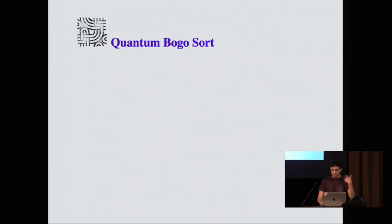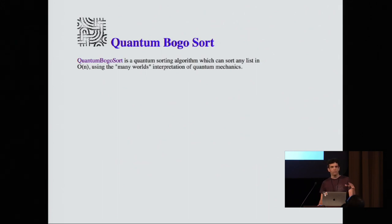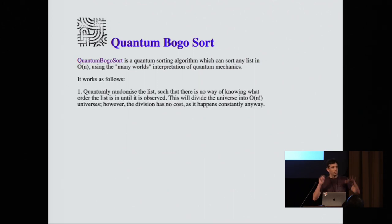So to explain how this works I need to talk a little bit about quantum bogosort, which is this algorithm. It's not an algorithm you would run on a quantum computer. Instead it uses the many worlds interpretation of quantum mechanics to make a better sorting algorithm. You take the list of values that you want to sort and you just shuffle them randomly, which divides the universe into O of n factorial universes. That's just a thing that happens.